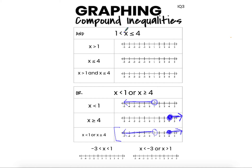First we need to realize this notation signifies the compound inequality x is greater than 1 and x is less than or equal to 4. So this left-hand side — 1 is less than x — is equivalent to x is greater than 1 and x is less than or equal to 4.